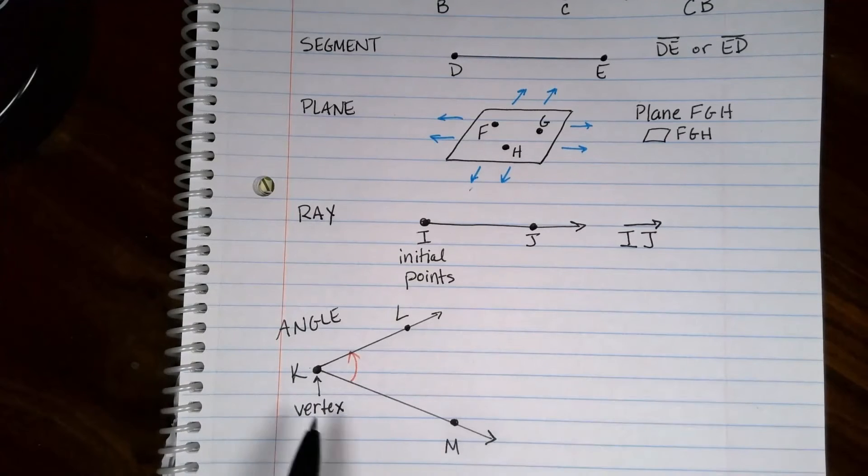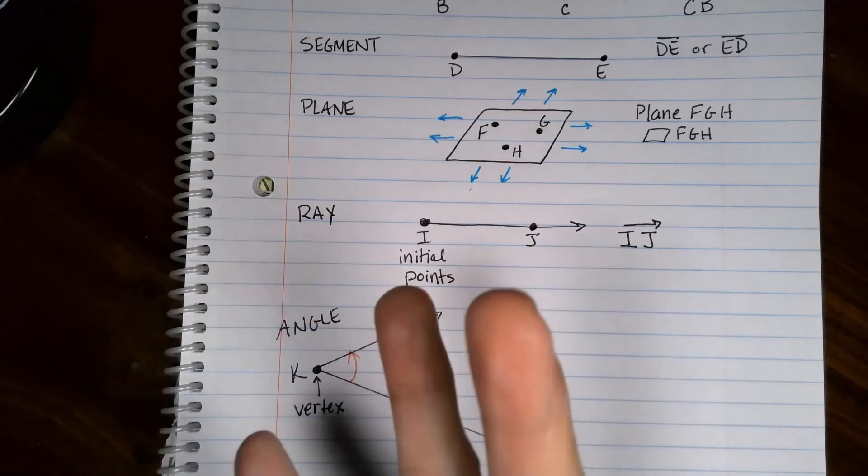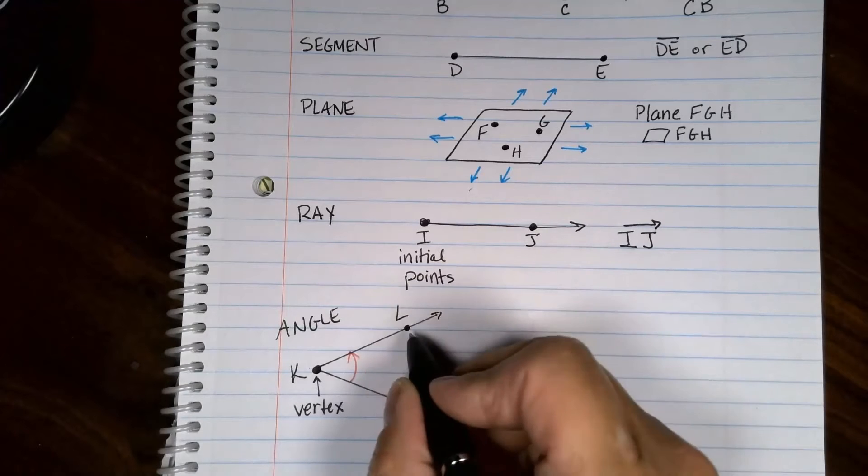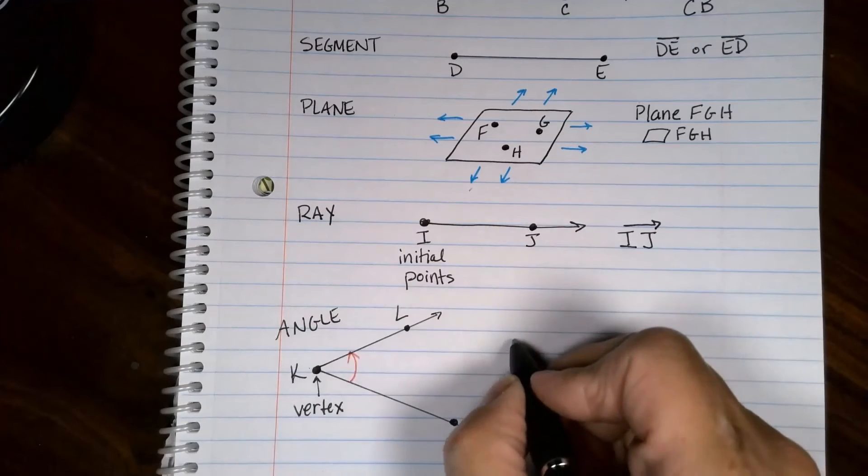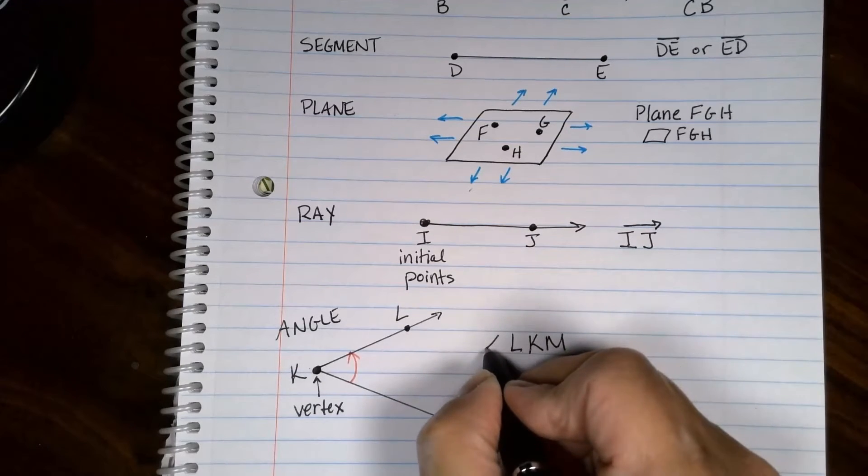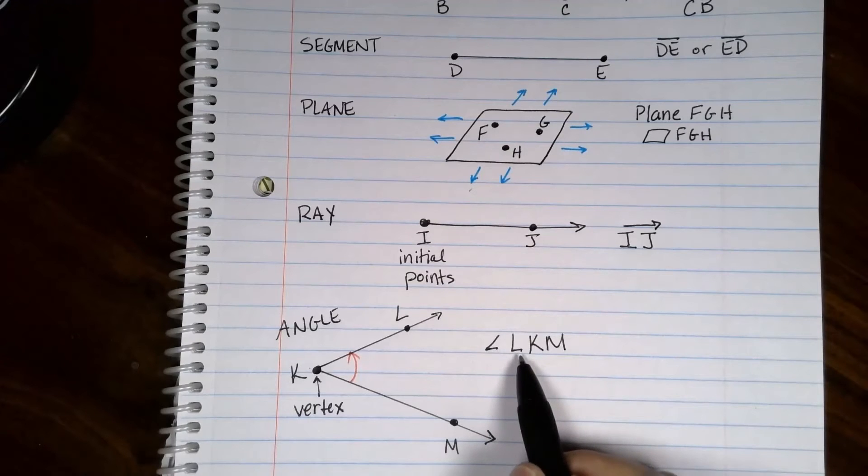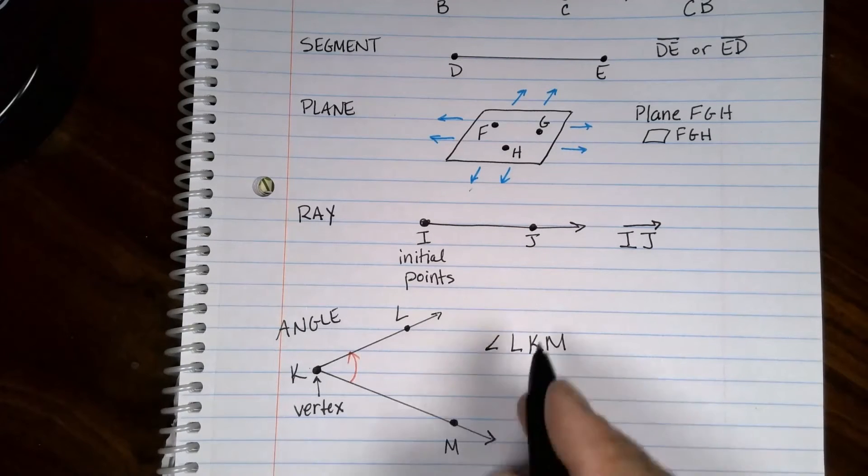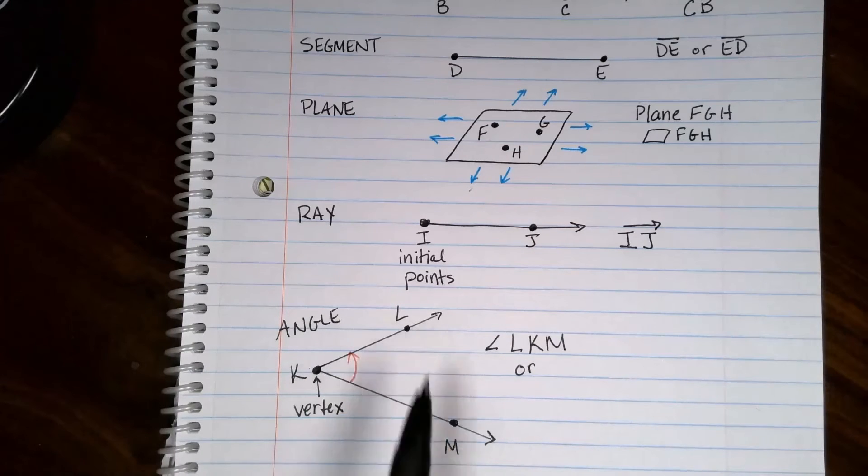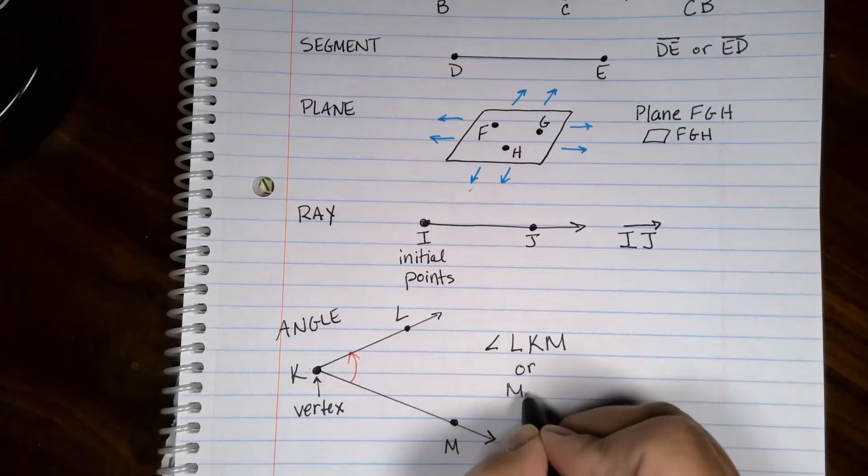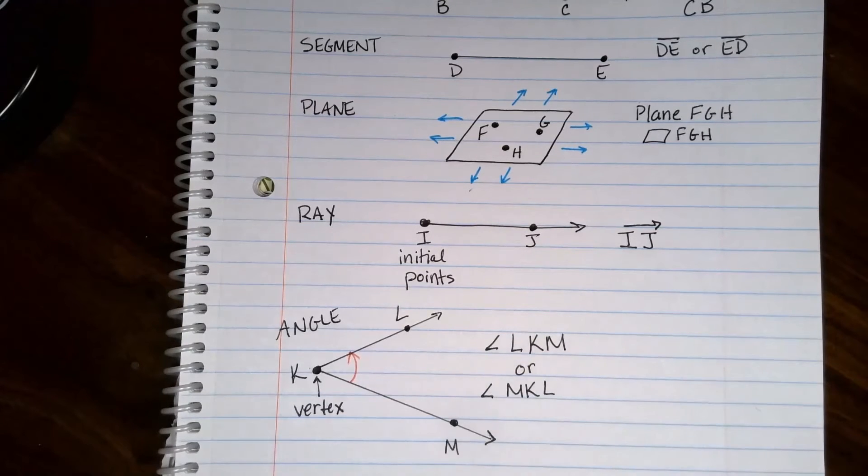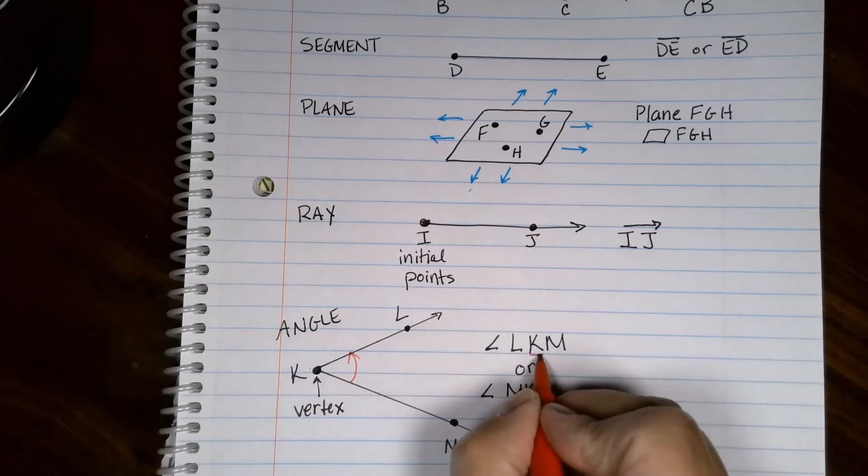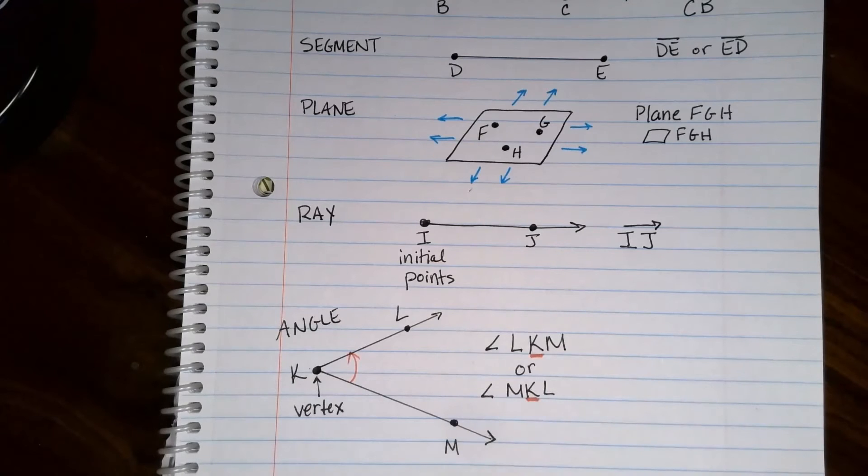When you name angles, sometimes you only need to have one letter. When we get in there I'll explain in context why it might be a little different, but for today I'm going to name this angle using all three points. There's two ways to do that. We could start at L-K-M and you put this little angle thing in front of it. Make sure you make that slanty enough so it doesn't look like your L. Or I could go the other way and go M-K-L. Now I did something very specific there. I can't start with the K because the K is the vertex. It needs to be in the middle of those three. We'll talk about that more as we get into the course and we talk about angles.